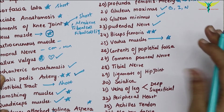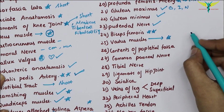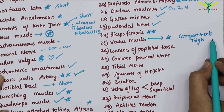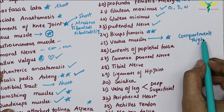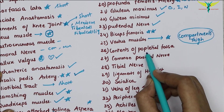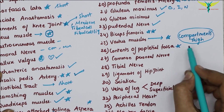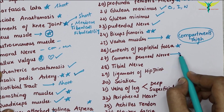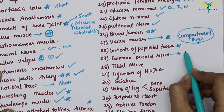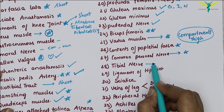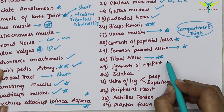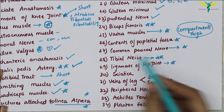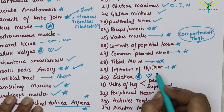Remember, in the lower limb the compartments of the thigh are always important — the muscles and nerve supply. The contents of the popliteal fossa are very important as a two-mark or very short question. The common peroneal nerve and the muscles it supplies are very important. The tibial nerve is very very important. The ligaments of the hip joint are very important.